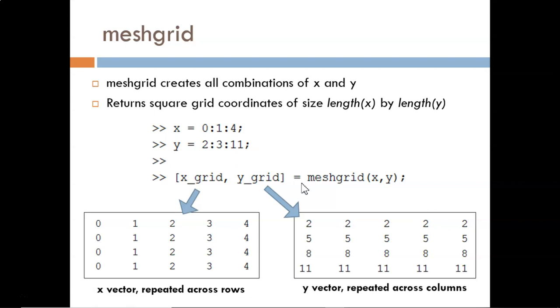Then, we call the meshgrid function, passing in these two vectors and requesting two output arguments.